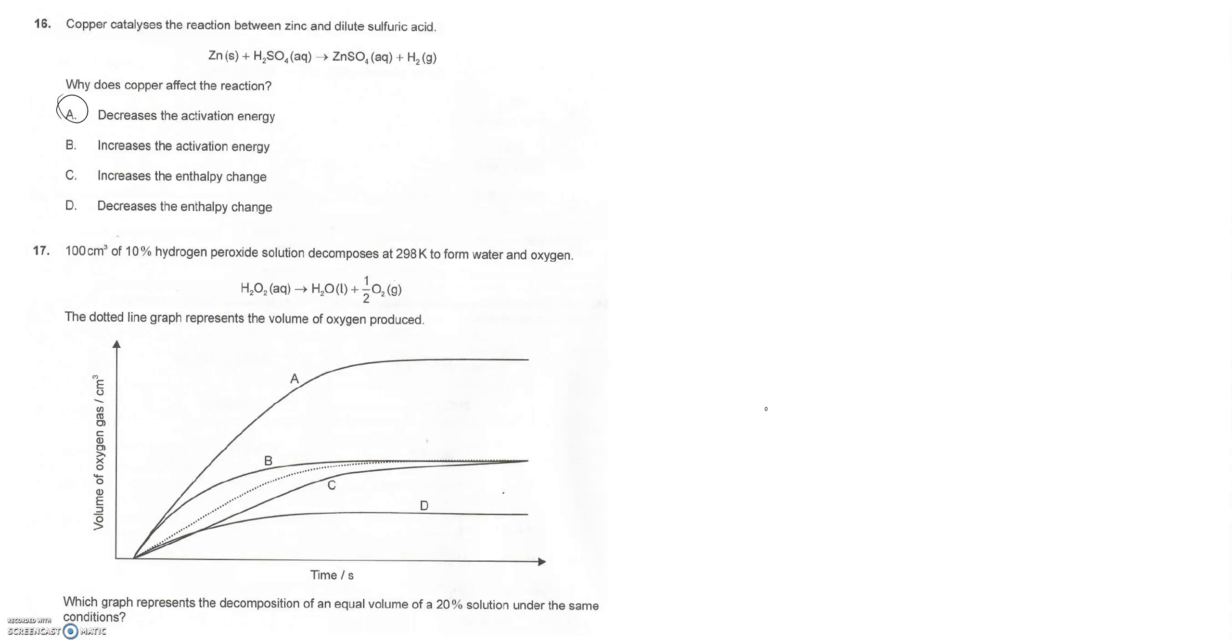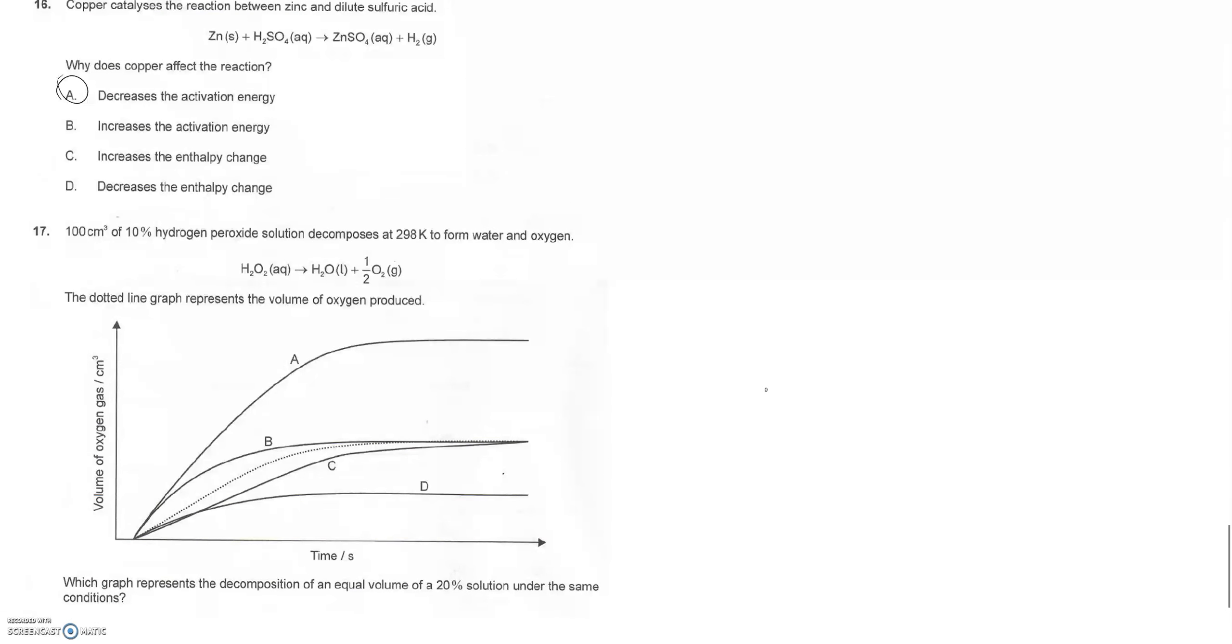And then the second question is saying hey, take a look at this graph. Which of these lines would occur compared to the original, which is the dotted line, when you are doubling—going from 10% hydrogen peroxide to 20% hydrogen peroxide with everything else held the same? So what's going to be the difference here?